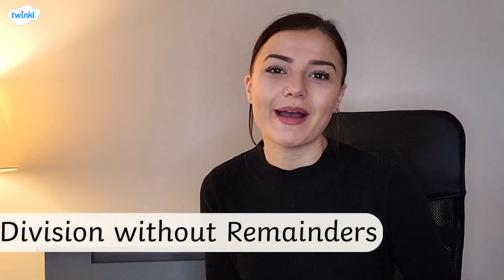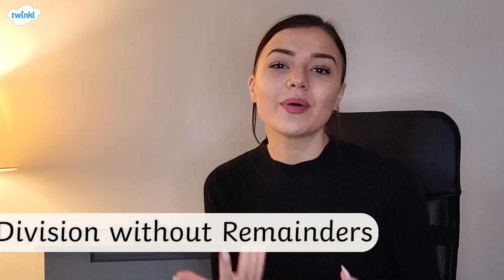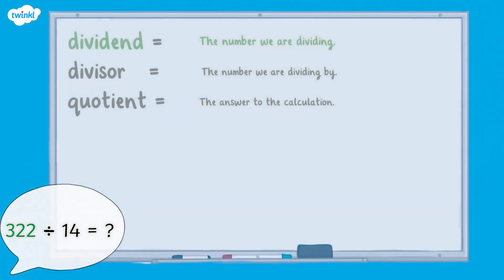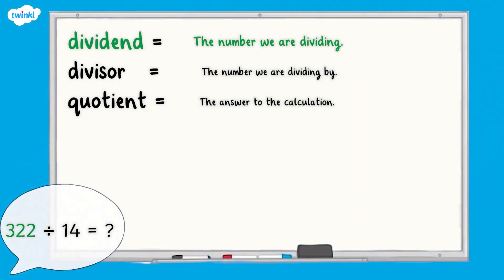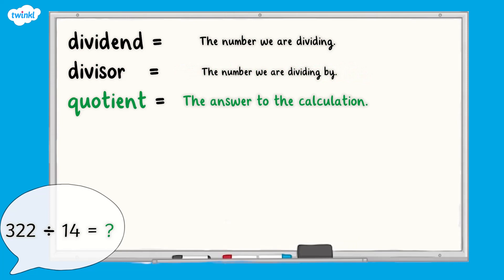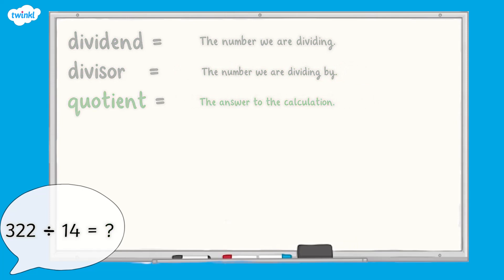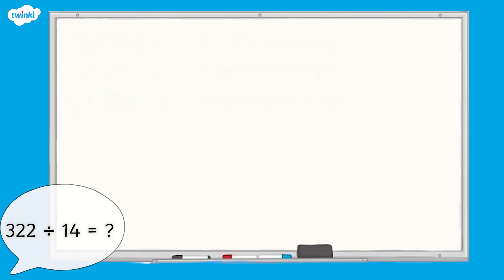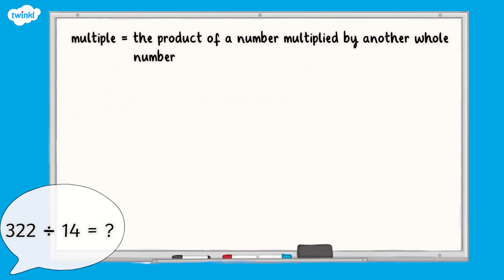This video is here to show you how to use the long division method when the divisor is a two-digit number. Let's have a go at dividing 322 by 14. The dividend, or number we are dividing, is 322. We are dividing by 14, so 14 is our divisor, and the quotient will be the answer to the calculation. When we divide by a two-digit number, it's a good idea to list the first 10 multiples of our divisor first, so we have these facts to hand.